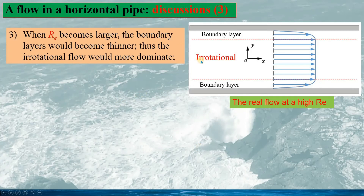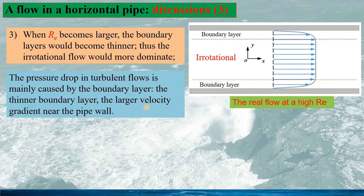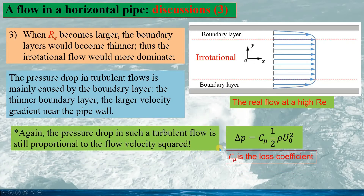When we increase the velocity further and the Reynolds number becomes larger, the boundary layer becomes thinner and the irrotational flow becomes more dominant. The pressure drop is mainly caused by the boundary layer; however, the thinner the boundary layer, the larger the velocity gradient near the pipe wall. Thus the pressure drop in fully turbulent flow is still proportional to the flow velocity squared, as given in the same expression.